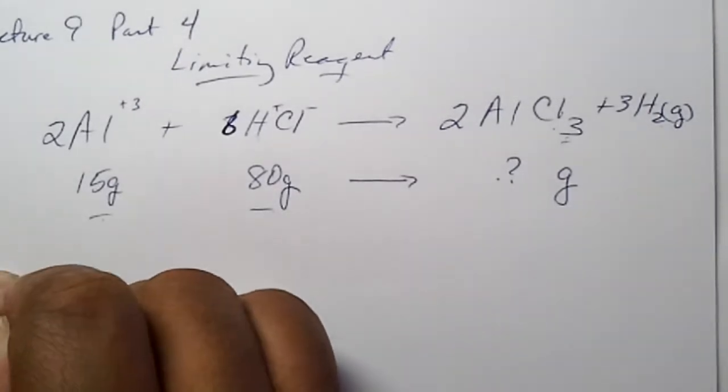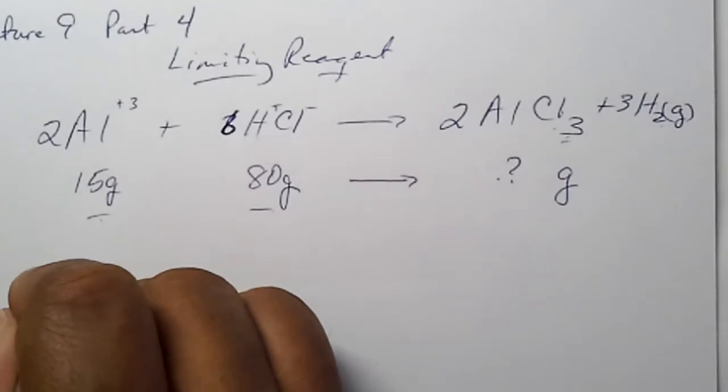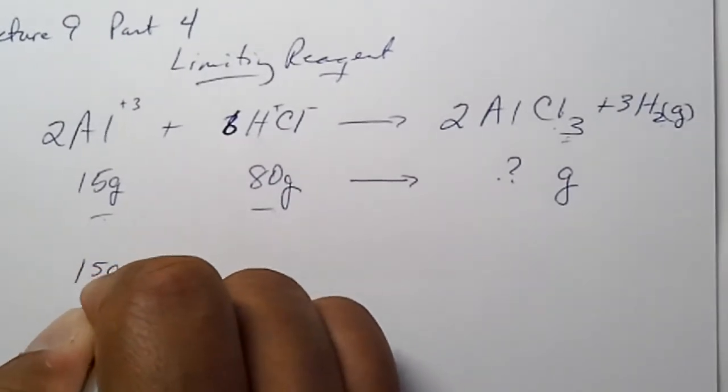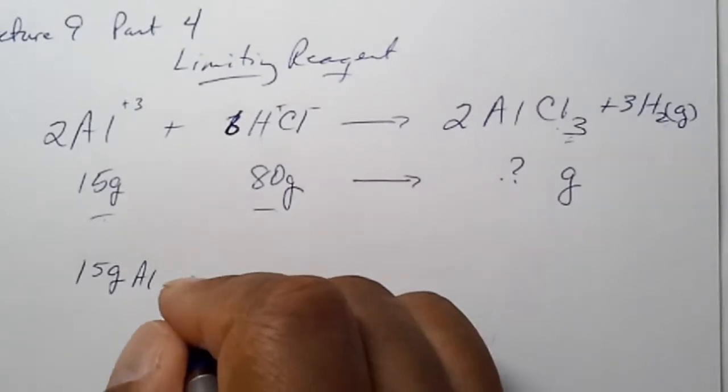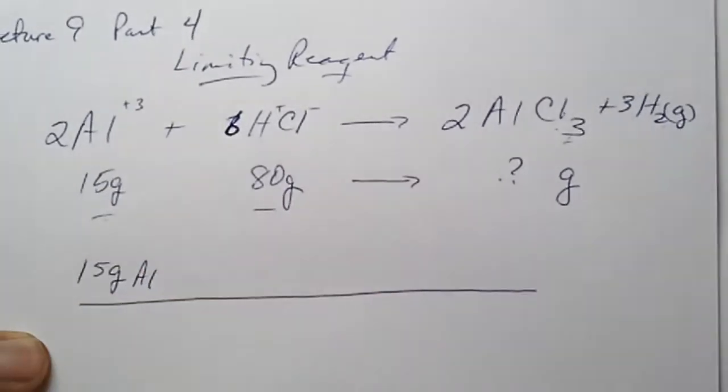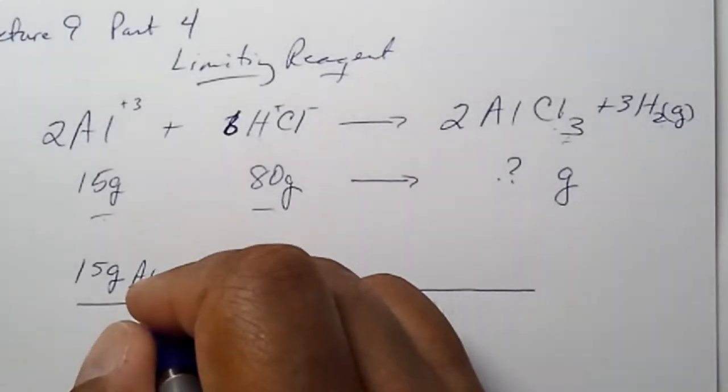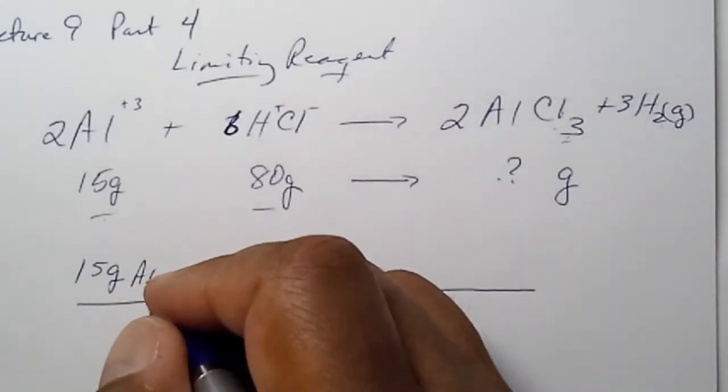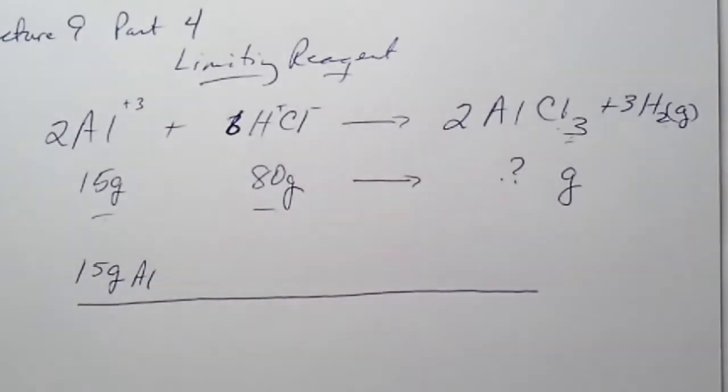Going from grams to moles. The thing about this reaction is that it is a little tedious because we have to do our grid for both reactants. All right. So, eight grams of aluminum. Let's see. I'm going to need a periodic table, I believe.